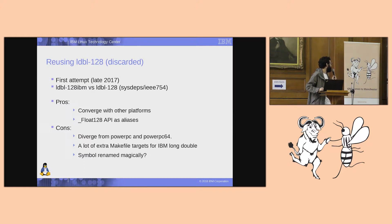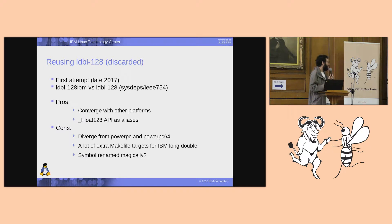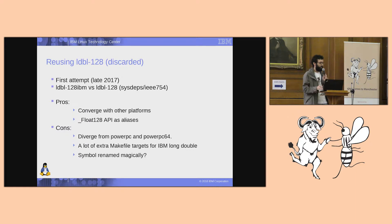Besides that, it would diverge the other PowerPC platforms from the little-endian implementation. I would need a lot of extra Makefile targets for keeping the old implementation available — I was going to have to rewrite a lot of Makefiles, like the Makefile for math functions, which would have to be rewritten or at least have a lot of duplication of targets.